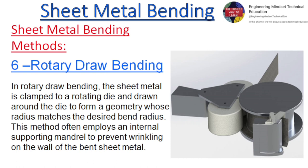Rotary draw bending: In rotary draw bending, the sheet metal is clamped to a rotating die and drawn around the die to form a geometry whose radius matches the desired bend radius. This method often employs an internal supporting mandrel to prevent wrinkling on the wall of the bent sheet metal.